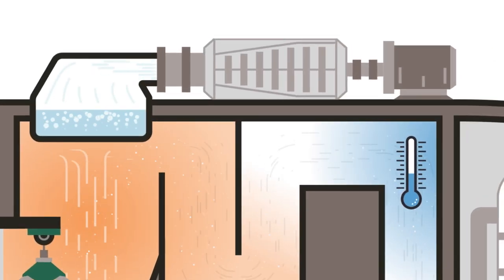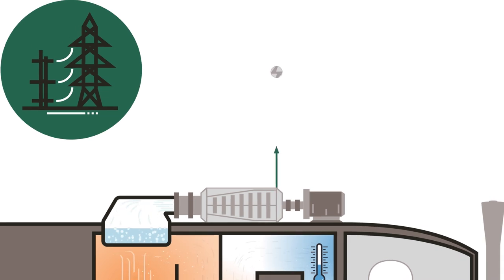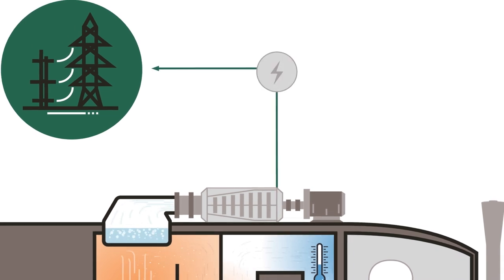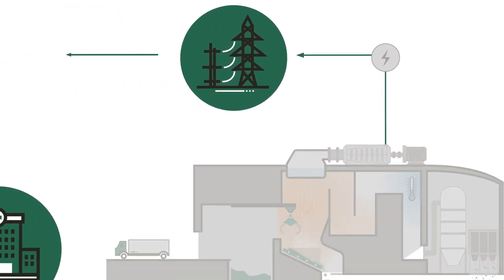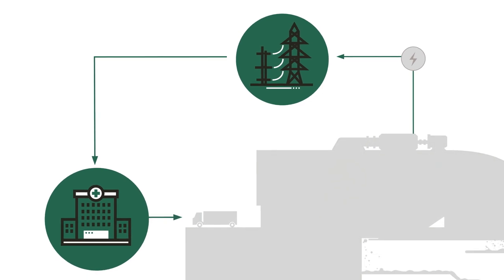Heat from that combustion boils water that turns into steam, which powers a turbine-driven generator and creates electricity. That electricity is distributed to a grid that's used to power homes and businesses.